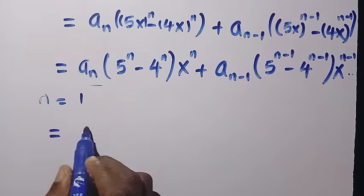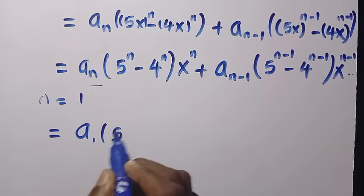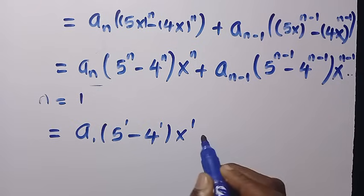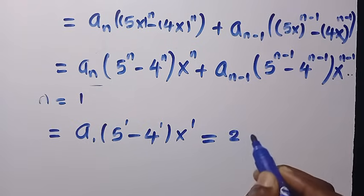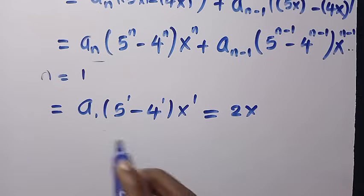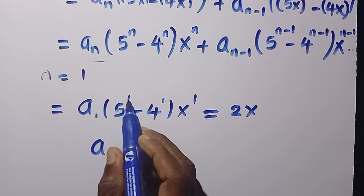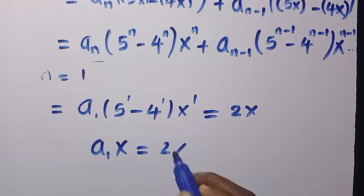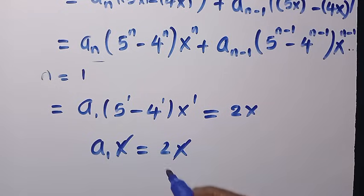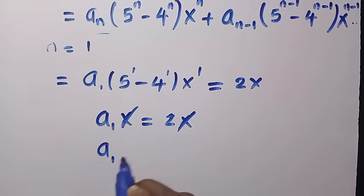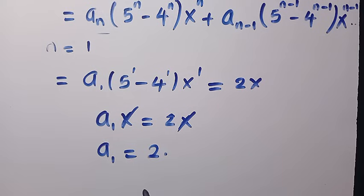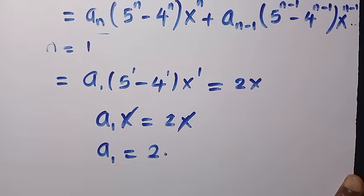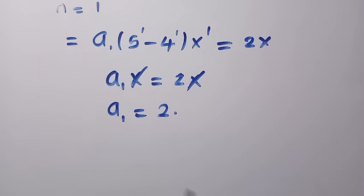With n equals 1, we get: a_1 (5^1 minus 4^1) x^1 equals 2x. This simplifies to a_1 times (5 minus 4) times x equals 2x, so a_1 times 1 times x equals 2x. Cancelling x gives a_1 equals 2.